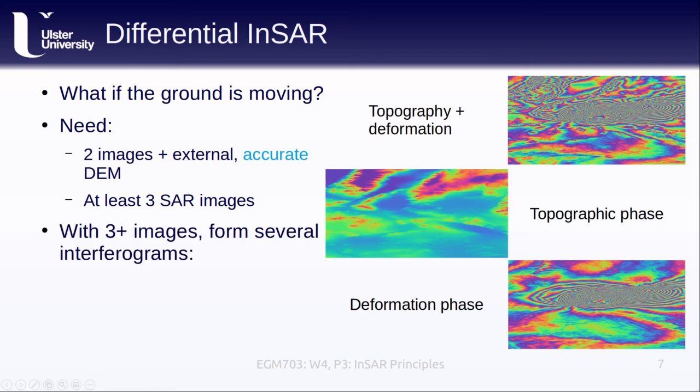In this case, we would take one pair separated by a longer amount of time, for example, several days or weeks, in order to measure the deformation. A second pair separated by a shorter amount of time, but where the satellite paths are separated by some distance, will enable us to estimate the topographic phase and subtract it from the interferometric phase of the first pair. This technique, where we subtract out the topographic phase in order to study displacement, is known as differential InSAR or just DInSAR.